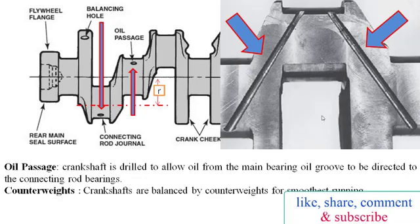Crankshafts are balanced by counterweights for smoothest running. When combustion happens, the forces deflect the crankshaft. The deflection occurs in two ways: to bend the shaft sideways and to twist the shaft in torsion. Harmful crankshaft twisting vibrations are dampened with a torsional vibration damper or harmonic balancer.